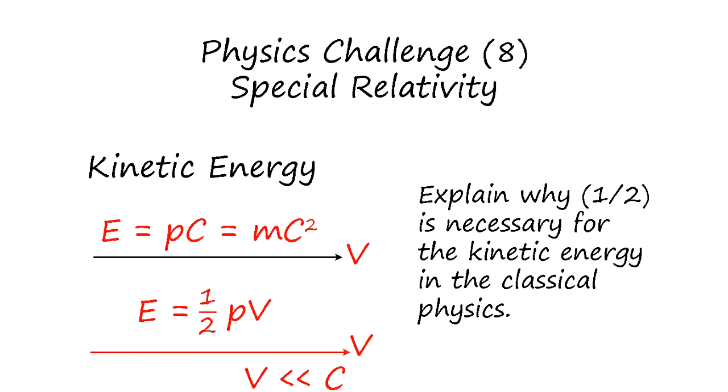Physics challenge 8, special relativity. We talk about kinetic energy in special relativity. We know the famous equation E equals mc squared. That's the energy we often talk about. But in physics, classical physics, everybody learns the kinetic energy is 1 over 2 mv squared. It doesn't look right because energy is mc squared, but classical physics says 1 over 2 mv squared. Why is that? Have you ever wondered?